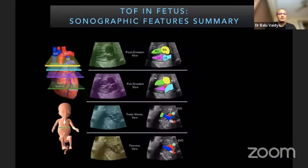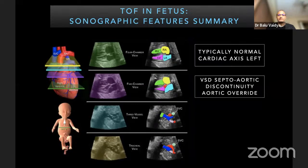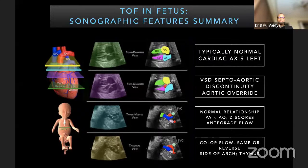The findings of tetralogy of Fallot: four chamber view — typically normal structures, axis could be shifted to the left. Five chamber or LVOT view — septo-aortic discontinuity. Three vessel view — normal relationships of great arteries, pulmonary artery smaller than the aorta. Three vessel tracheal view — color flow and the side of the arch. As a bonus, the thymus can be seen, which gives clues towards your probability of associated 22q deletion. This is the sonographic summary of the features of tetralogy of Fallot.